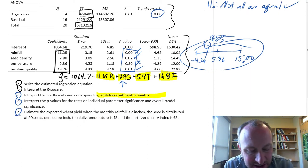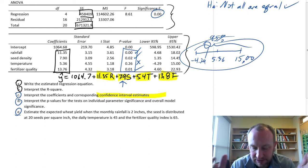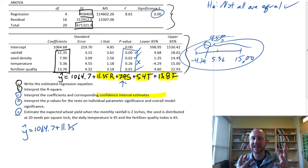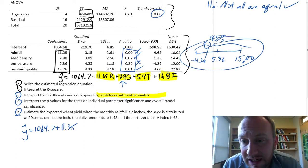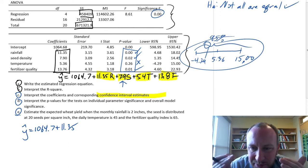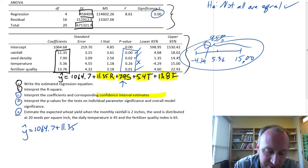Part E. Estimate the expected wheat yield with this information. All we have to do for these is take our estimated regression equation and we just have to plug in the numbers that we're given. Making sure that if there's any strange units, we always have to keep in mind the units of measurement.